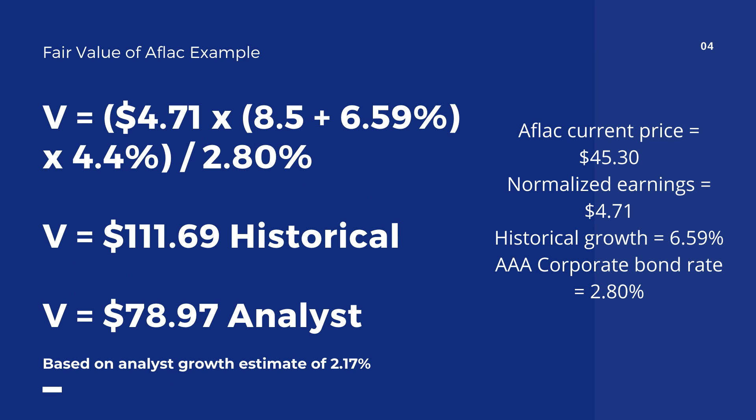An example of fair value using Aflac. Aflac's current price equals $45.30, normalized earnings equals $4.71, historical growth rate of earnings equals 6.59%, and the current AAA corporate bond rate equals 2.8%.